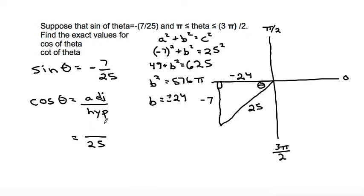So the cosine, the adjacent side is negative 24. So we plug in negative 24 for the adjacent, and that makes our fraction, that cosine of theta is equal to negative 24 over 25. So that's our sine and our cosine.